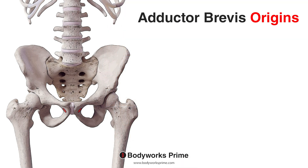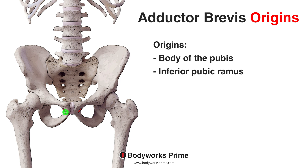Let's take a look at the origins next. You can see those highlighted in red on this picture here. The origin starts on the body of the pubis and then moves on to the inferior pubic ramus. This section of the pubis would be the body of the pubis, and then this section down here would be the inferior pubic ramus. So the origin is split between those two landmarks on the pubis.